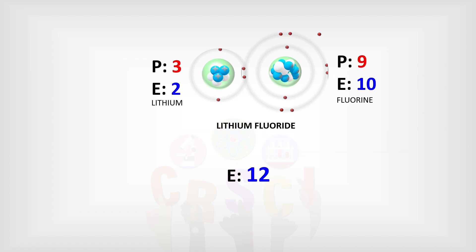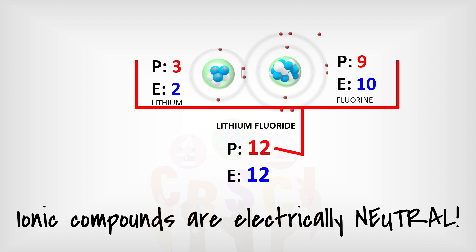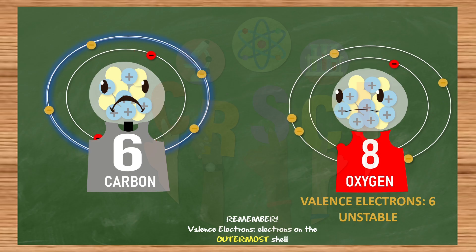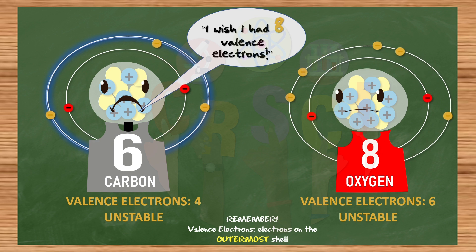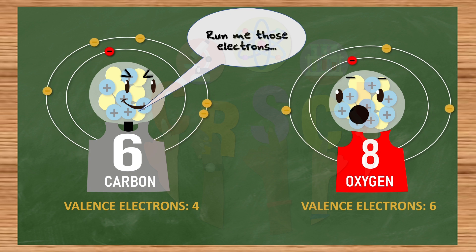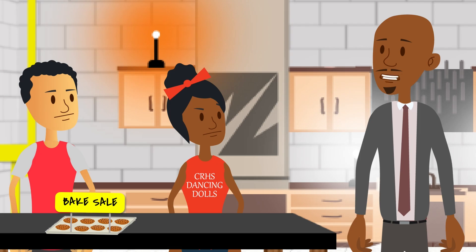Even though lithium lost electrons and fluorine gained electrons, the total number of electrons in the entire compound is equal to the total number of protons, so the final compound is neutral. Give me two elements: carbon and oxygen. How would carbon and oxygen form an ionic bond? Carbon wants eight valence electrons and it only has four, so since it's a non-metal, it could steal four of oxygen's electrons. But wait — oxygen is still not stable.